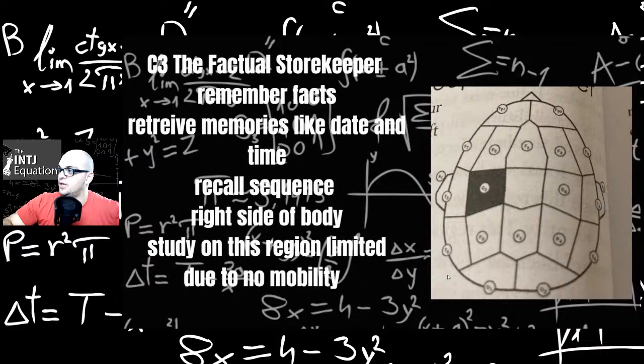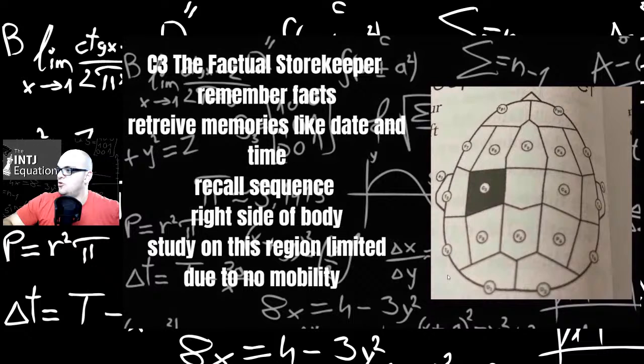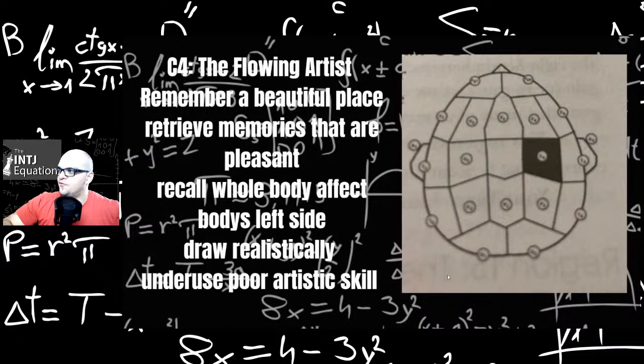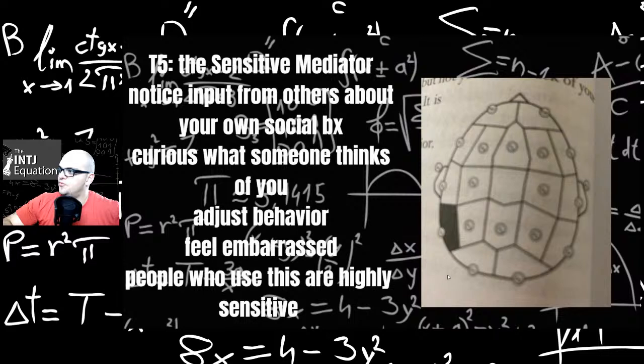C3, the factual storekeeper. How Si that sounds. Remembers facts, retrieves memories like dates and times, recall sequence, right side of the body. Study of the region limited due to no mobility. C4, the flowing artist: remember a beautiful place, retrieve memories that are pleasant, recall whole body affect, affects body's left side, draw realistically. Underused poor artistic skills. So I would say Si, but kind of sounds ISFP-ish maybe. INFPs and ENFPs and all of them could be pretty artistic as well.